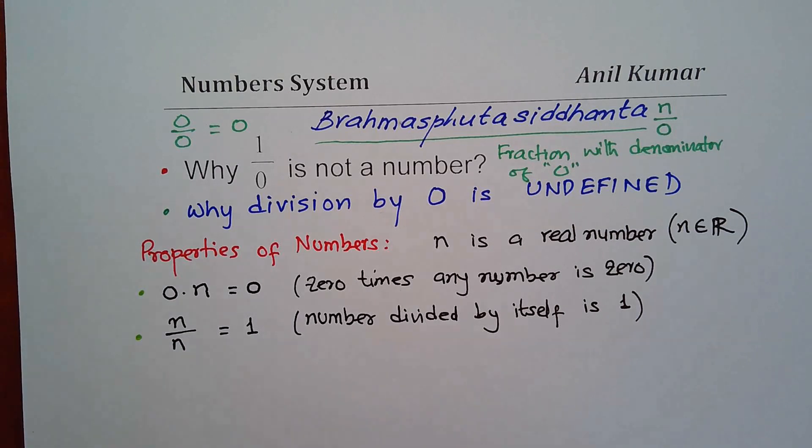So we are talking about 1 over 0. Now, let us consider that to be a number. So our assumption, this is a good way of proving. Let us assume, so our assumption, let 1 over 0 be a number.